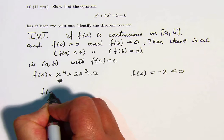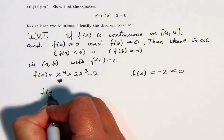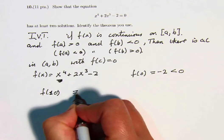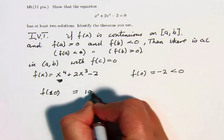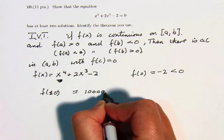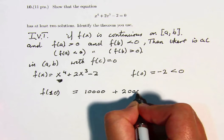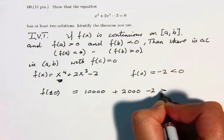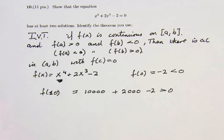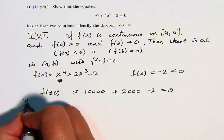So let's try f of 10. And this is equal to 10,000 plus 2,000 minus 2, which is certainly greater than 0.